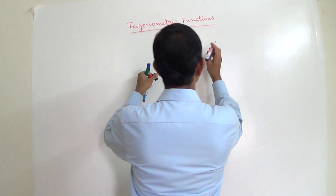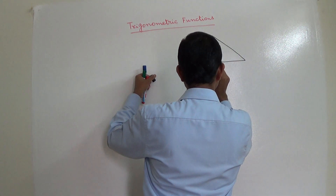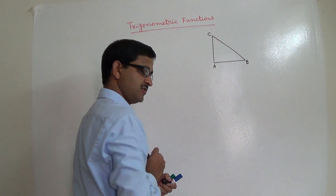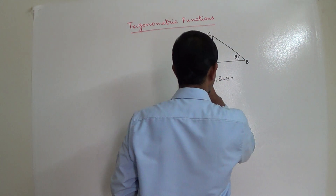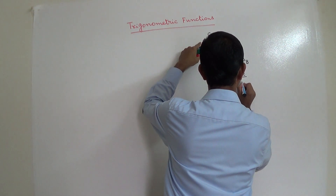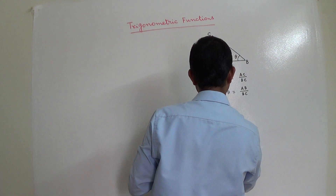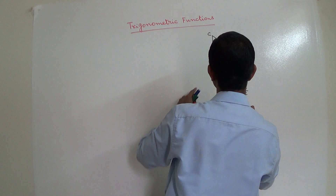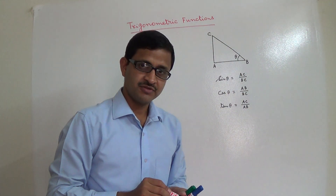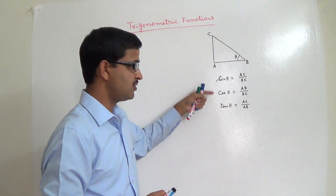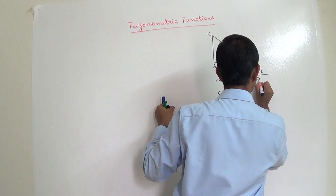If I have a right angle triangle with vertices A, B, C and the angle is theta, then we know: sin θ = AC/BC, cos θ = AB/BC, and tan θ = AC/AB. The reciprocals of these three trigonometric ratios — sin θ, cos θ, tan θ — are cosec θ, sec θ, and cot θ respectively.